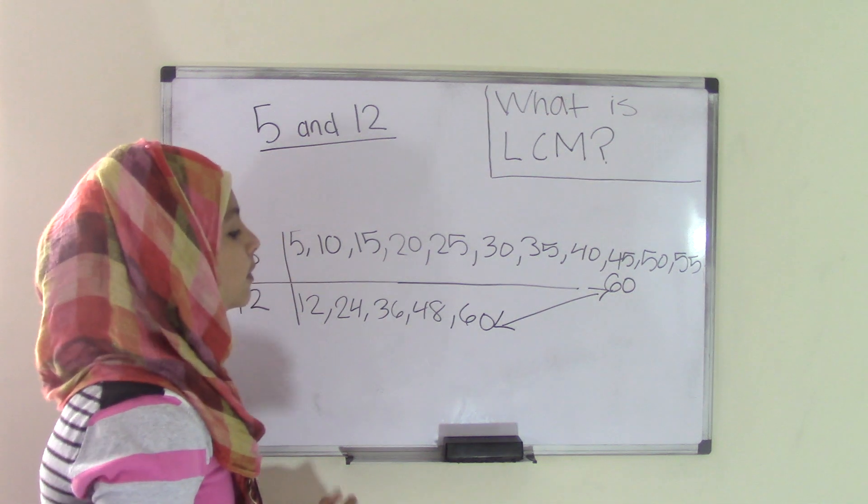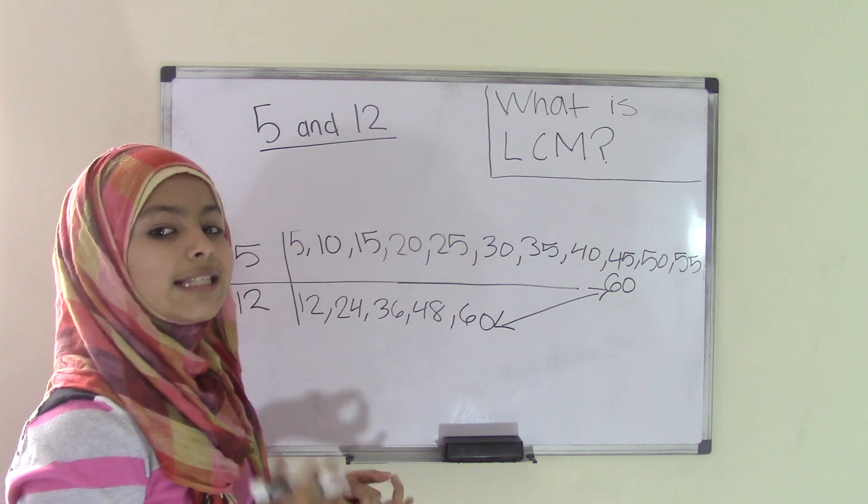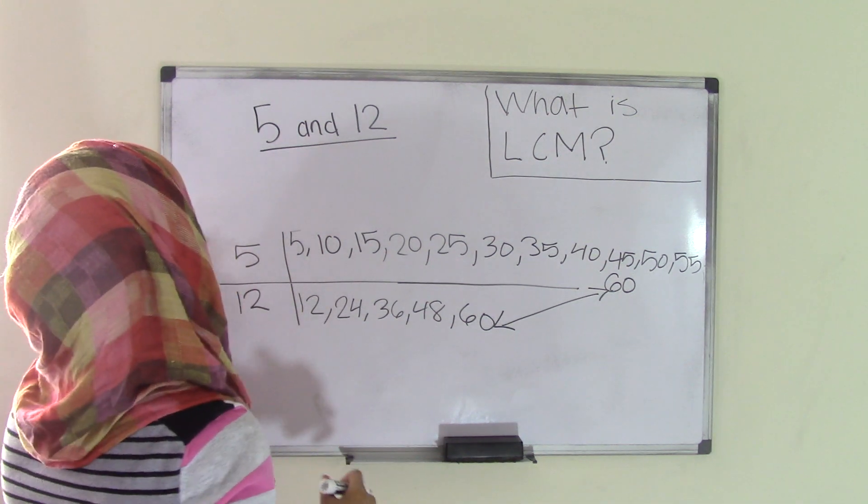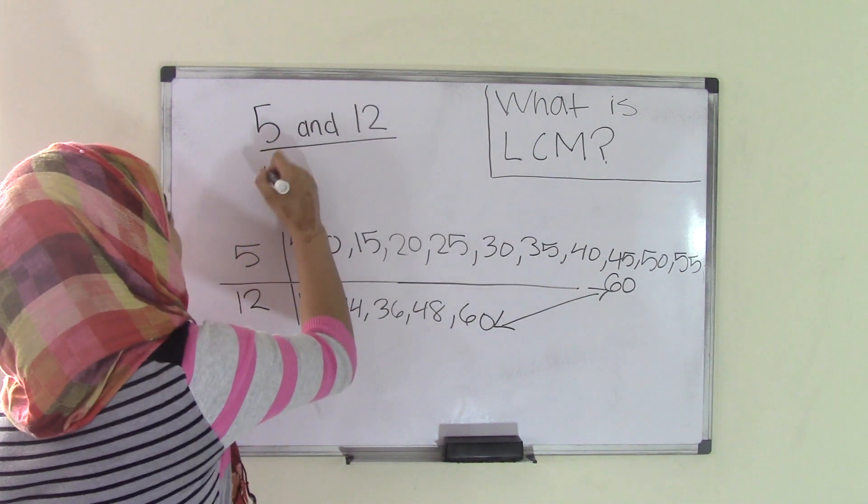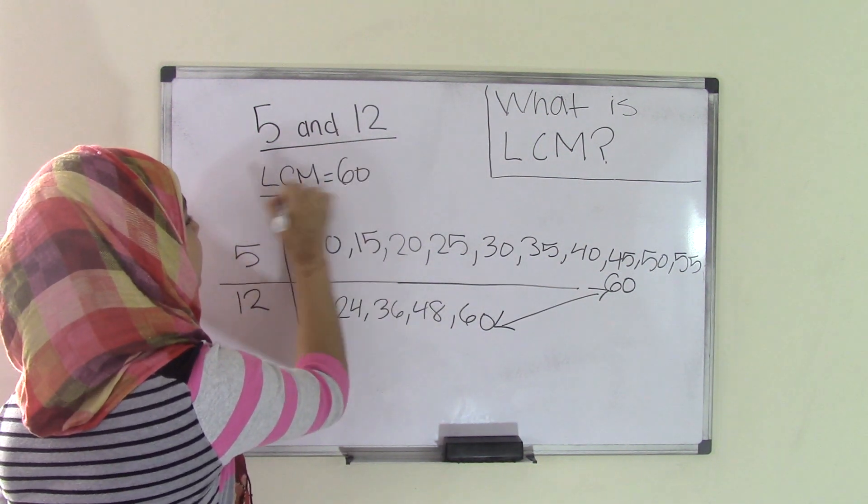So since this is my very first pair that is common, this is going to be my least common multiple because it is the least or the smallest number that I could find that is common in between both of the numbers, which is 5 and 12. That means the LCM or least common multiple for both of these numbers is 60.